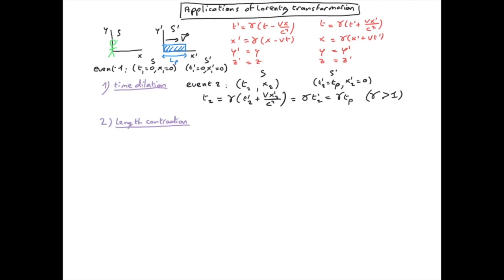The observer asks: what is the length L of this object measured from the S frame? When you measure length, you do so at the same time, so the observer measures the positions of the two edges at T₁ = 0 and T₂ = 0 in the S frame.